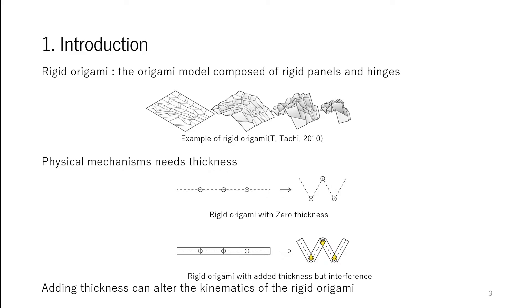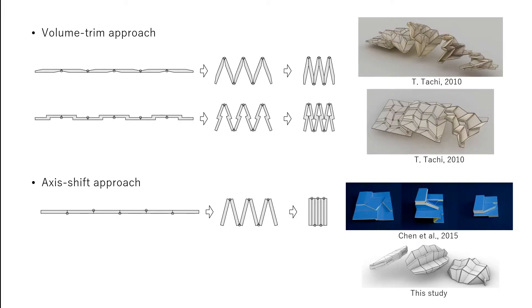Although origami models are mathematically considered to have a zero-thickness surface, this is no longer true when applied to physical mechanisms. There are two major approaches.